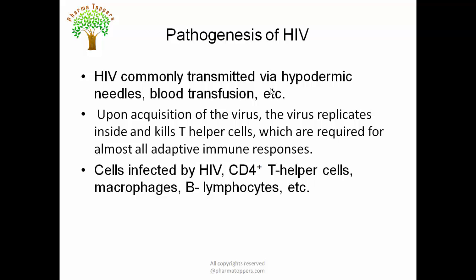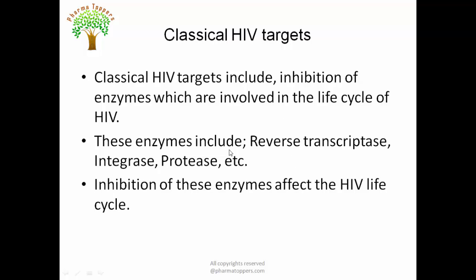Next is the pathogenesis of the virus — how it causes disease. It is commonly transmitted via hypodermic needles, though use of used needles is less common nowadays. It is also caused by blood transfusion reactions. Upon acquisition, the virus replicates inside the cell and kills helper T cells, directly affecting the adaptive immune response. Cells affected include CD4+ cells, helper T cells, macrophages, and B lymphocytes — all cells responsible for the immune response.